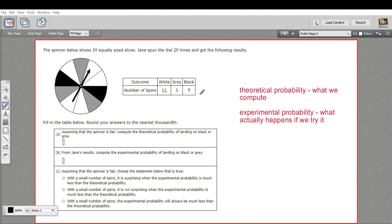These are the results of Jane's experiment of this probability situation. It says fill in the table below and round the answers to the nearest thousandth. So this time it sounds like we are converting our probabilities to decimals.